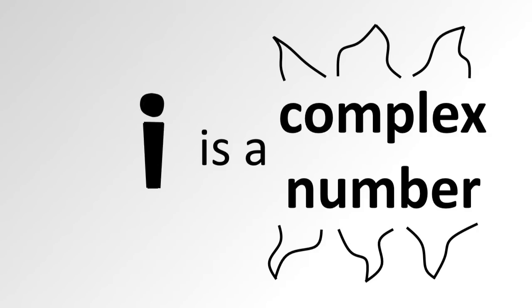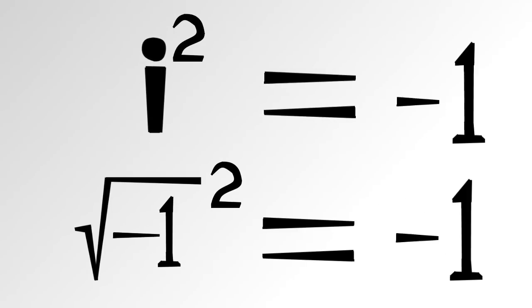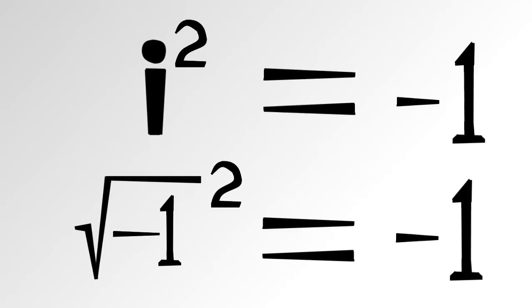Any number involving i is known as a complex number. The neat thing about i is that when you square it, it equals negative 1. This can make some interesting things in mathematics possible.